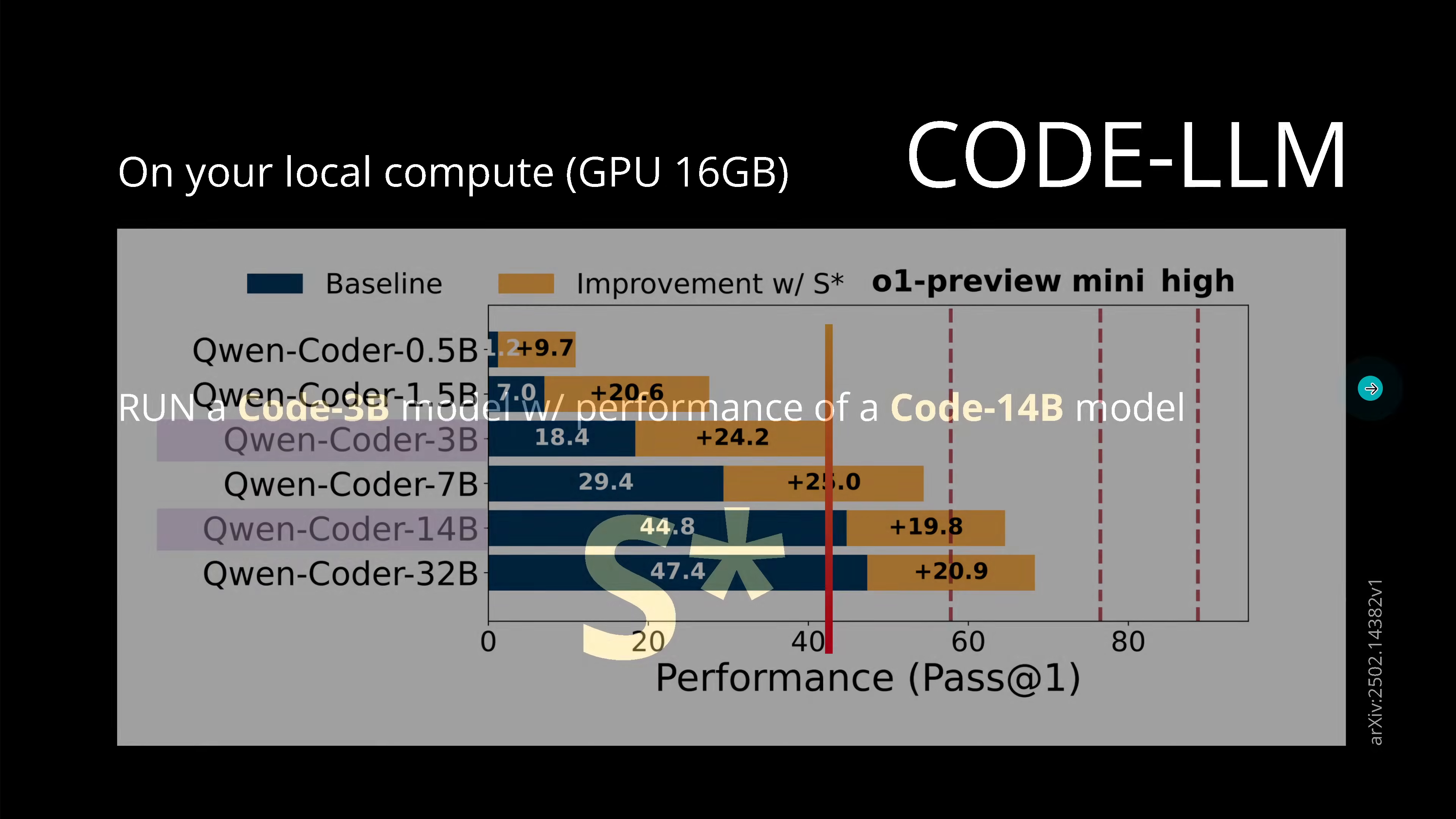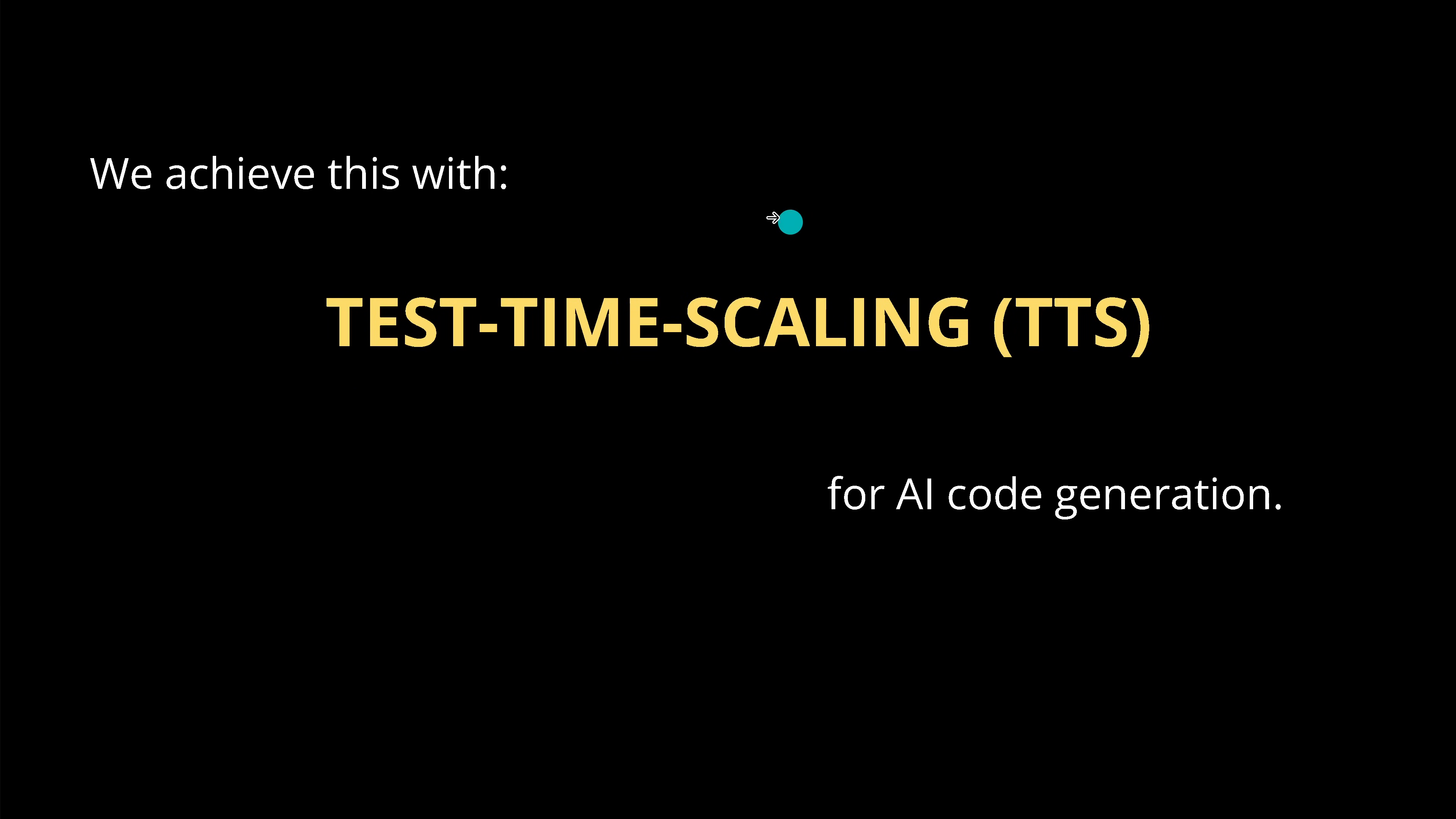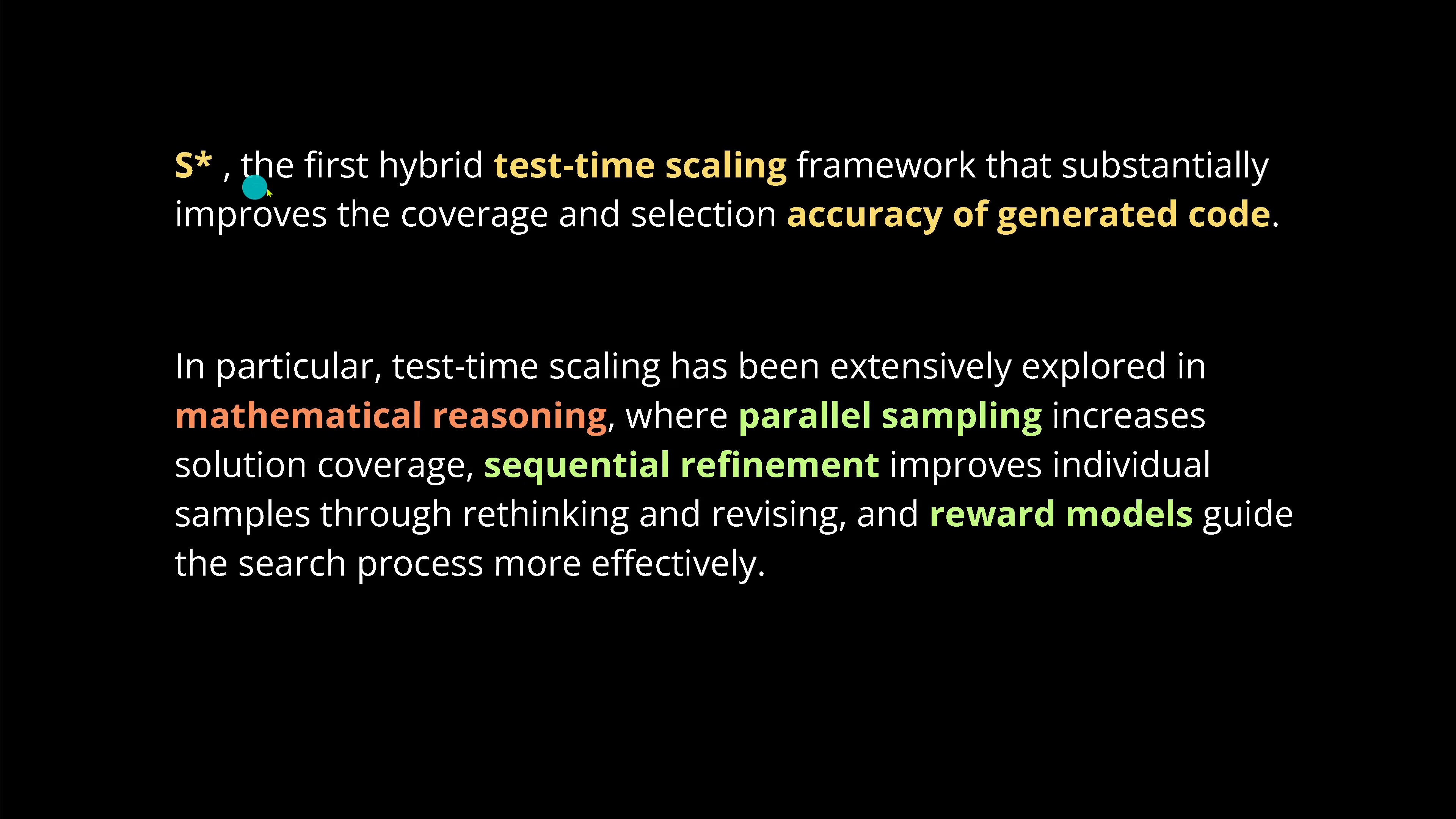What we do is run a code 3B model with S-Star and we have the performance of a code 14B model. Now how do we achieve this? This is easy. You remember we have test time scaling TTS, and now we apply it for code generation.